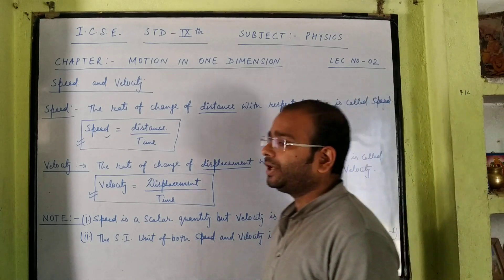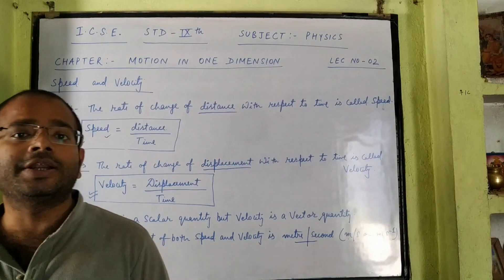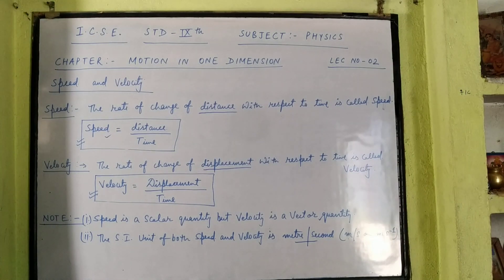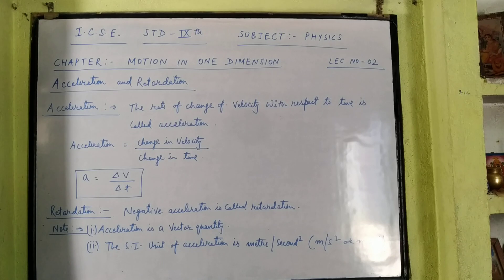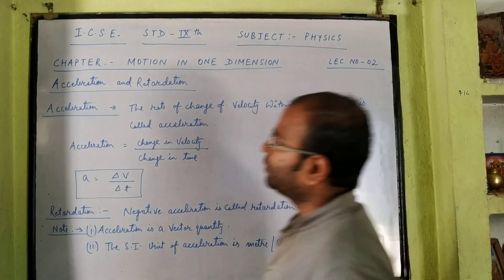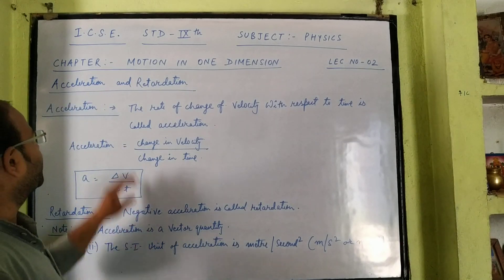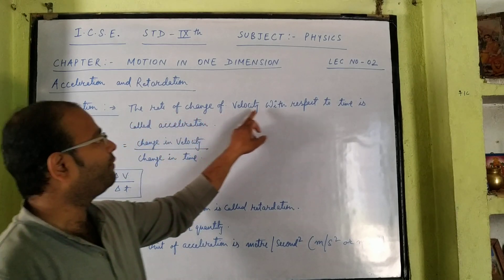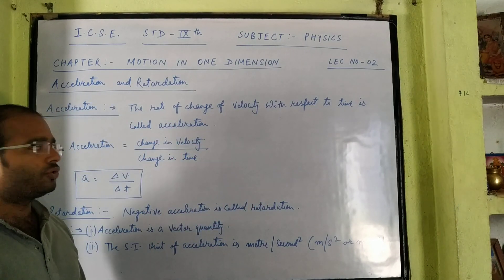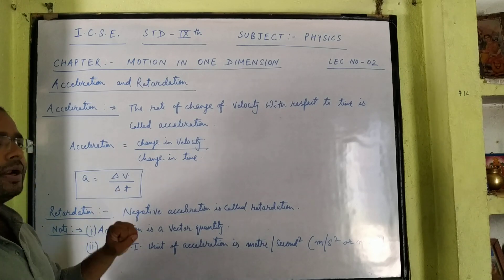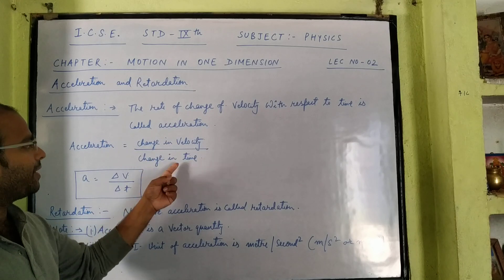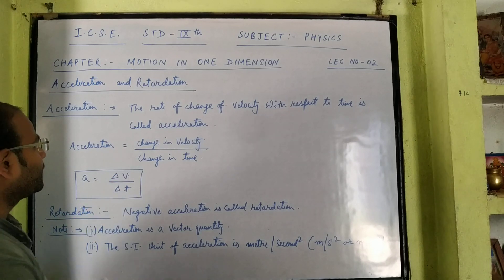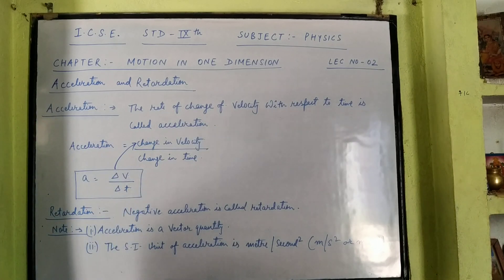The other physical quantity that describes motion is acceleration. The rate of change of velocity with respect to time is called acceleration. Mathematically, acceleration is equal to change in velocity by change in time. In short, A is equal to delta V by delta T, where delta V represents the change in velocity and delta T represents the change in time.